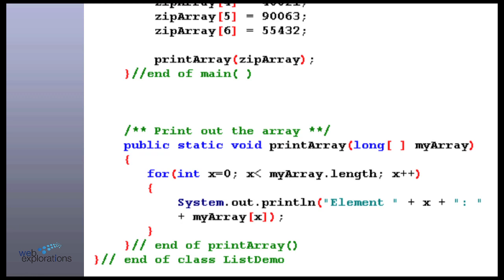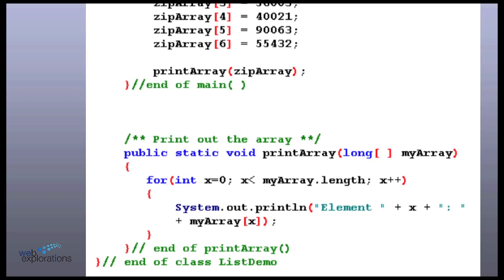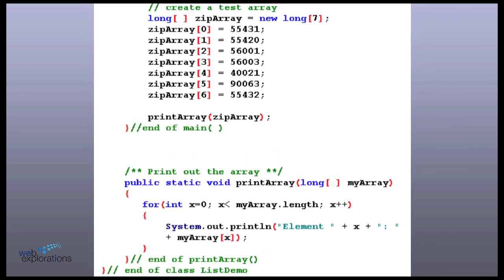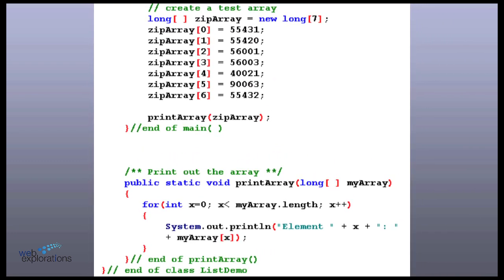Does it actually print the array out so you can see what's in it? Or is it just sending it to memory? No, it actually prints it out. Let's take a look at it. Yeah. So when you print it out, it's going to say system out println element 0 is, and then it's going to be array 0 is what number? 55431. And then it's going to loop around. X is going to be 1. And my array index 1 is going to be 55420. So yeah, it'll print it out.